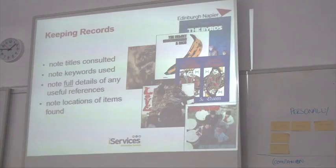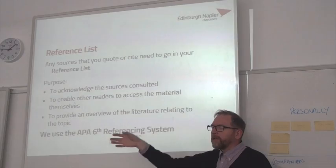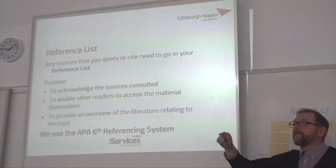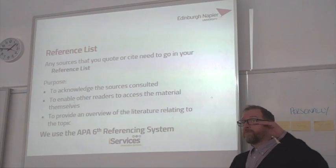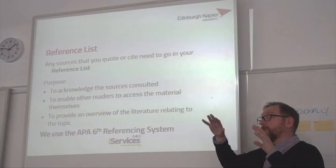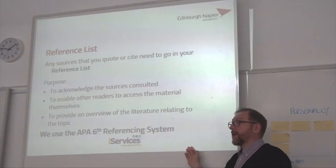You've got to do a reference list — acknowledge the sources you've cited. There's a difference: a reference list contains only items you've cited in your work. A bibliography is just a list of things you've read. It has to relate to the material within your work.